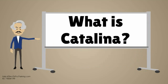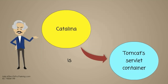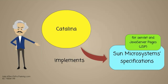What is Catalina? Catalina is Tomcat's servlet container. It implements Sun Microsystems specifications for servlet and Java Server Pages.